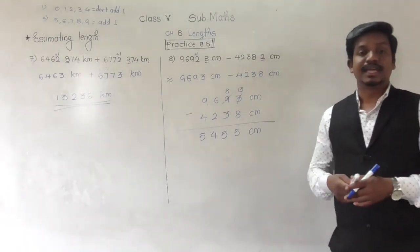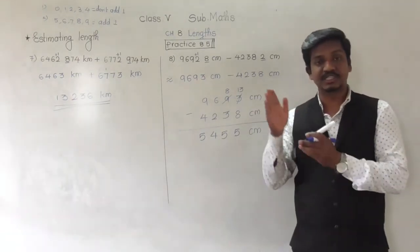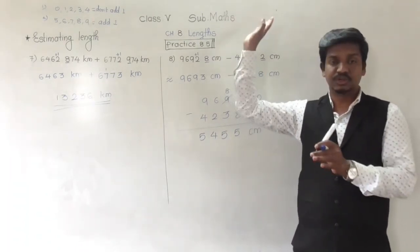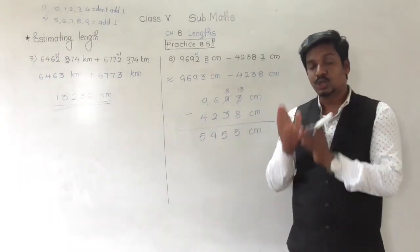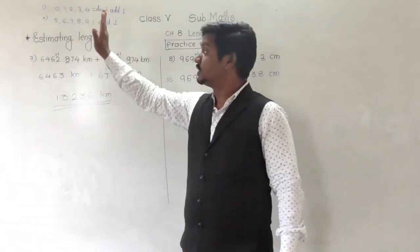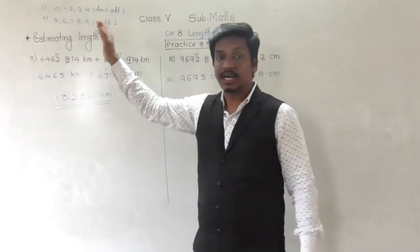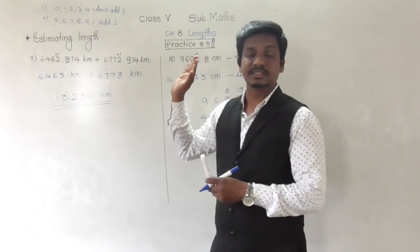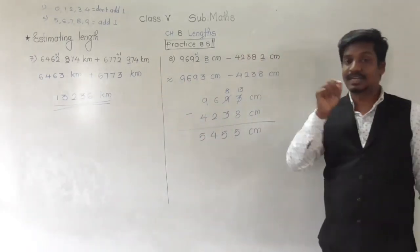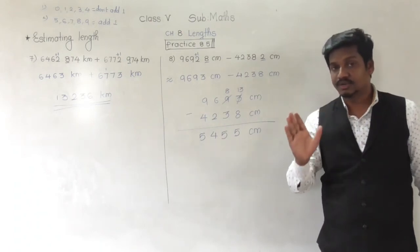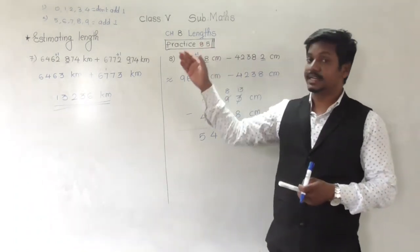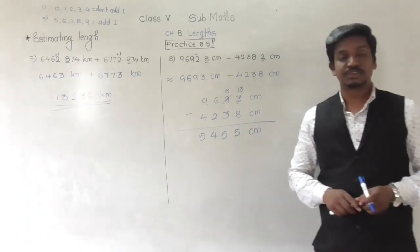So in this way we can estimate length. What we have to do is check the first digit after the decimal point — even if two or three digits are given, we check only the first. If the first digit is 0, 1, 2, 3, or 4, don't add 1. If it is 5, 6, 7, 8, or 9, add 1 to the ones place. Then add or subtract as needed. Examples 9 and 10 you have to practice by yourself. If you have any doubt, feel free to ask. This completes chapter 8 on length. Thank you and have a nice day.